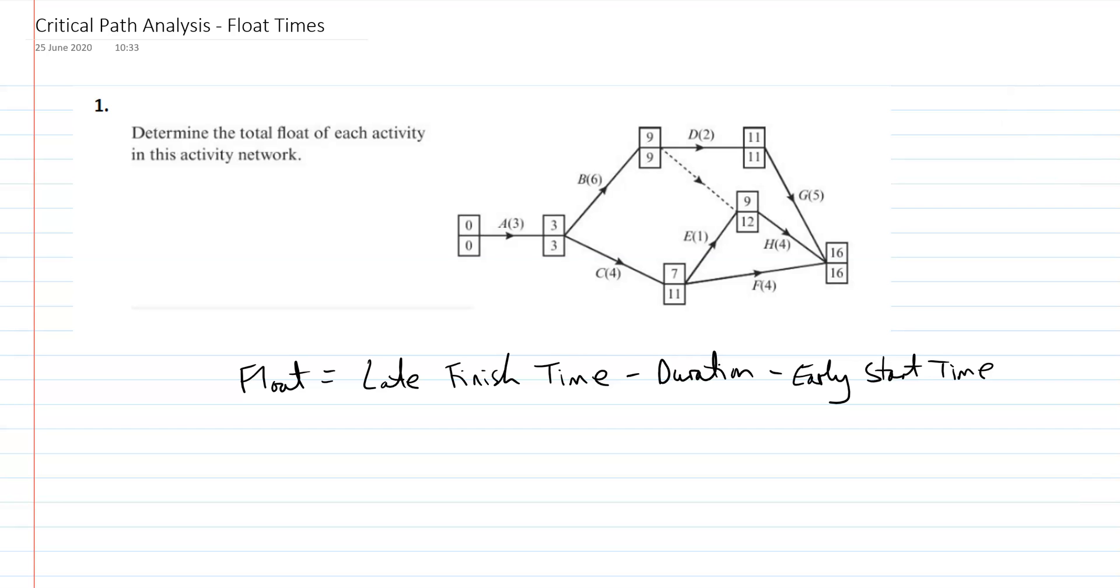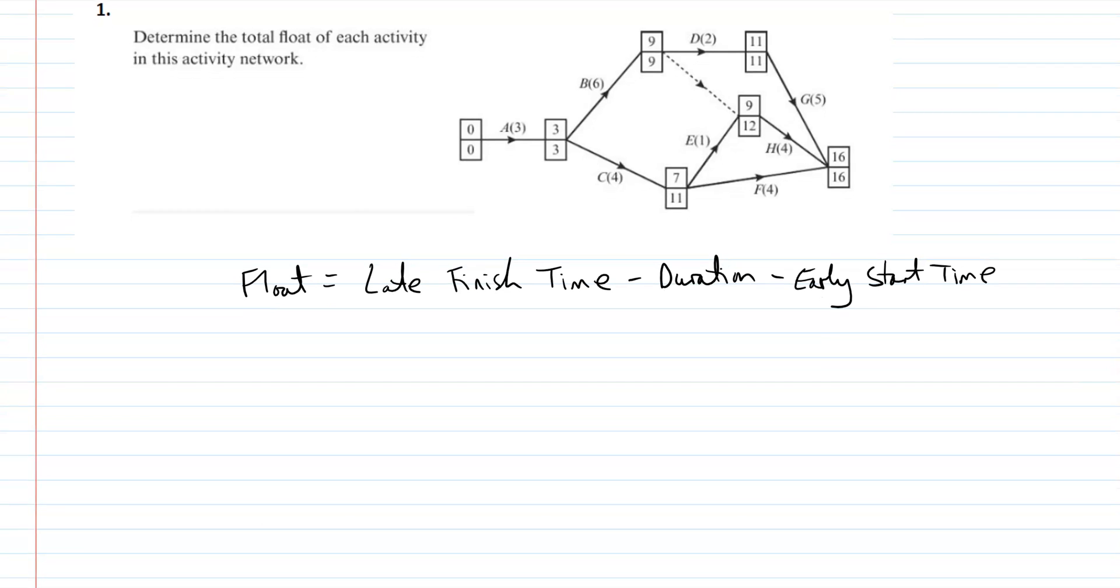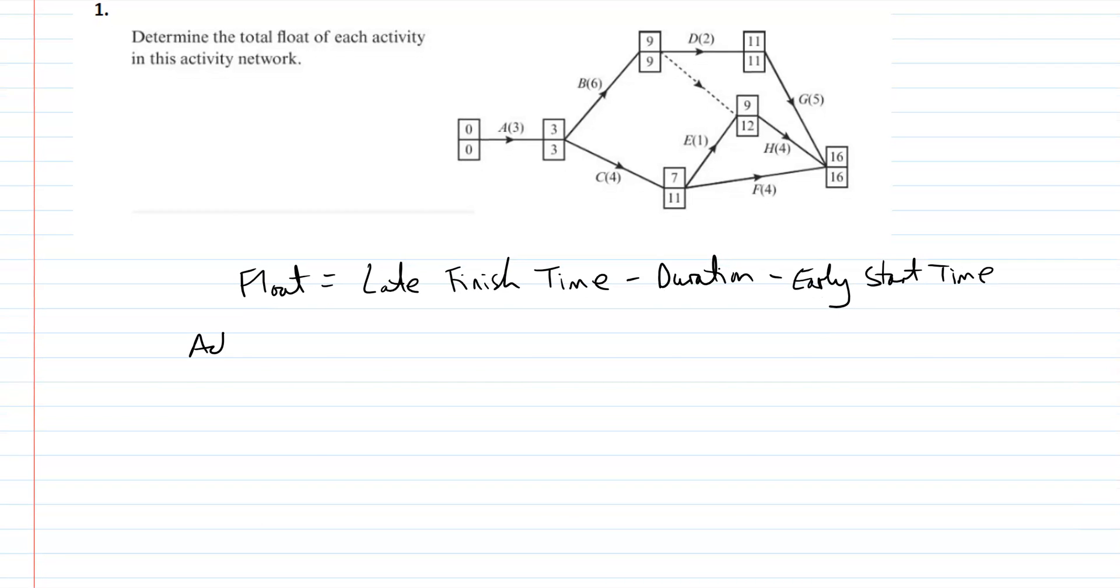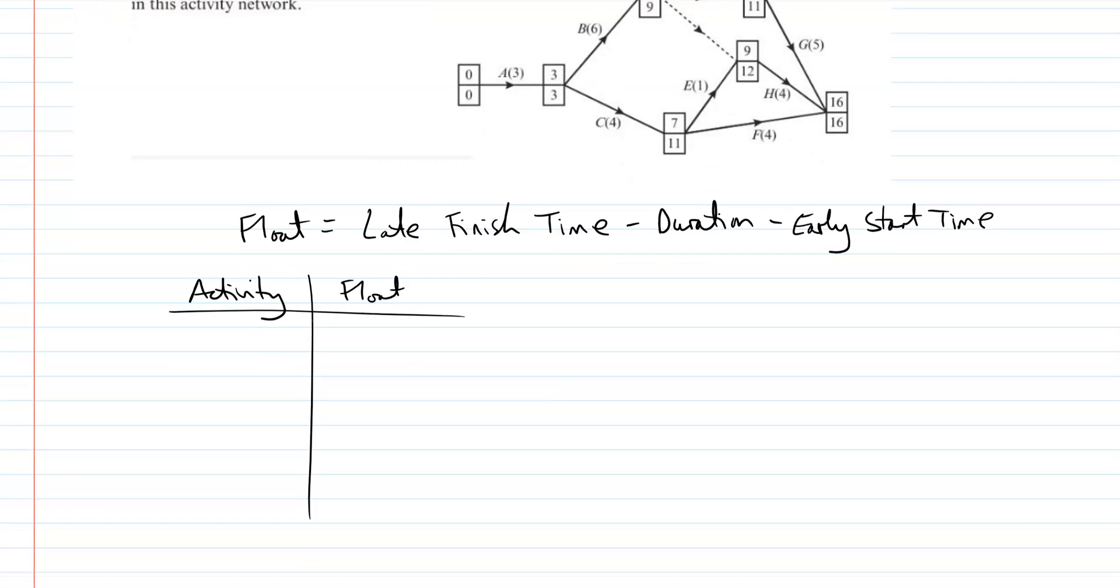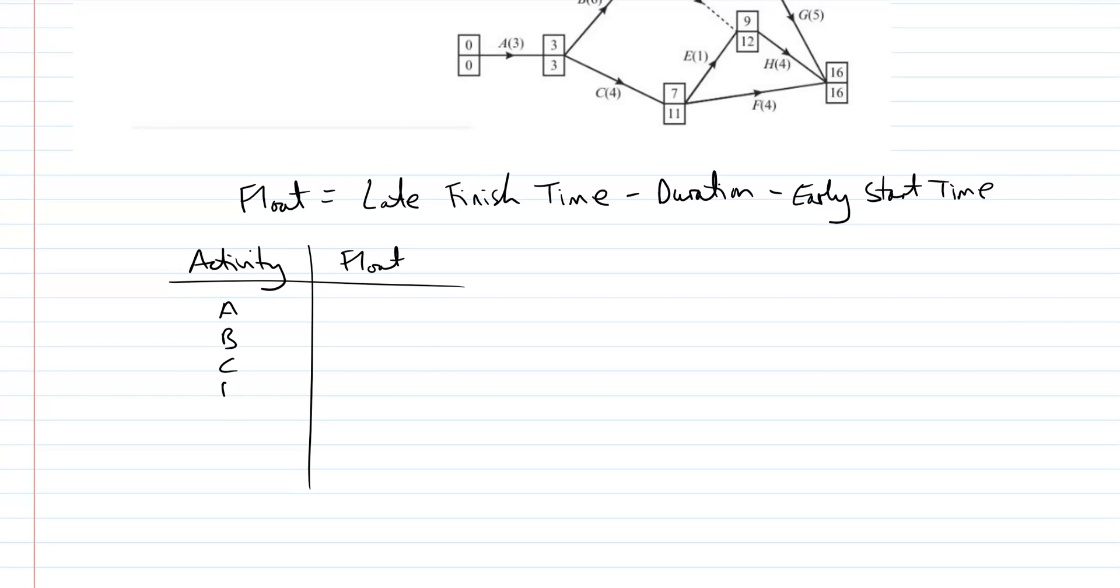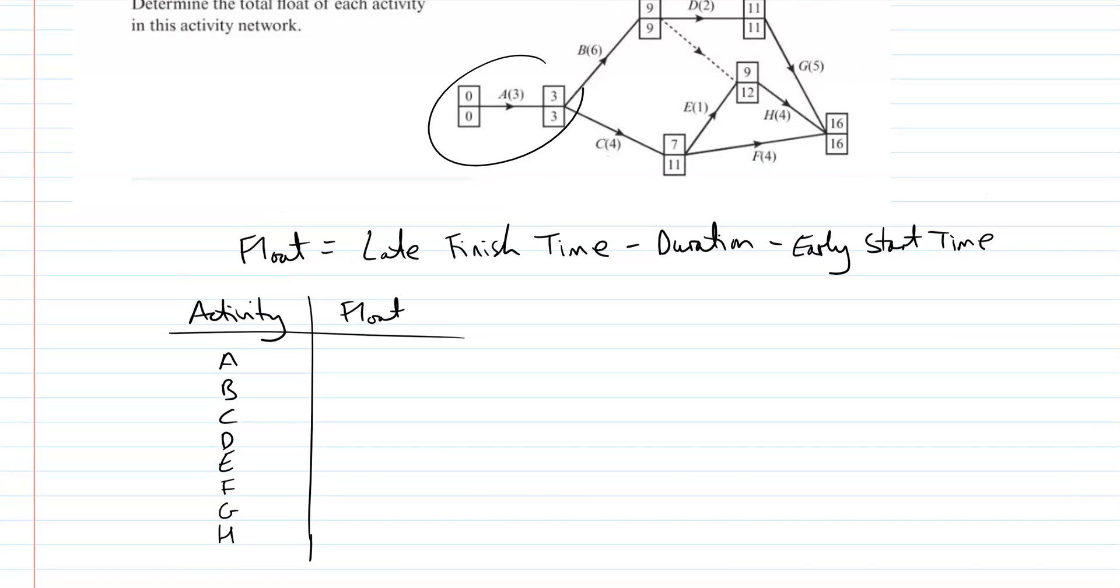But these are really quick to calculate, so we're just going to have a float for all of these. So our floats—we can have a little activity list and a little float list. We've got A to H. And we're going to look at our floats for each one. So the float of A is here. It's going to be the late finish time minus these two added together. So three minus three minus zero. So the float of A is zero. It's critical, so zero float. I'll leave these up for you as well.